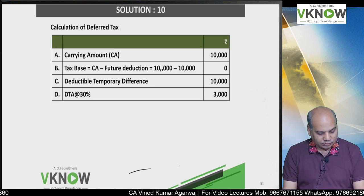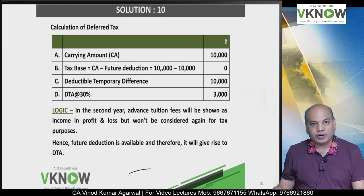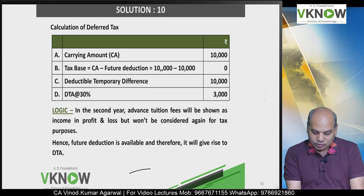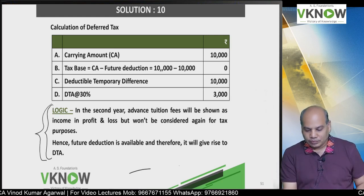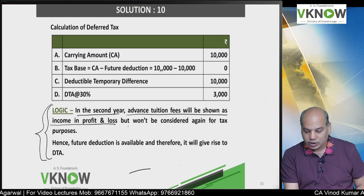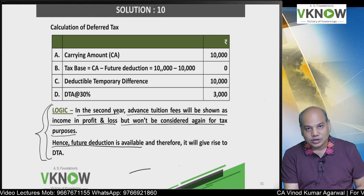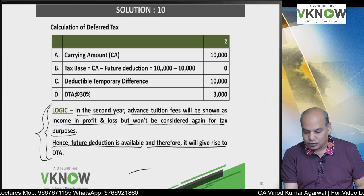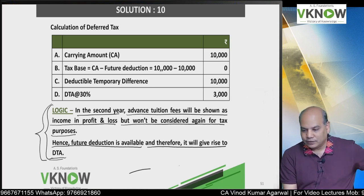Deferred tax asset 3,000. I have written one note for you. In case if you find it difficult, you can read the note. In the second year, advanced tuition fees will be shown as income in the P&L account, but it won't be considered again for tax purpose. Hence future deduction is available, and therefore it will give rise to deferred tax asset.